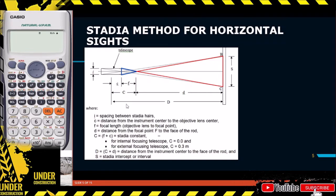So, capital D — which is the distance from the instrument center to the face of the rod — equals small d plus C. That is the total distance between the instrument and the rod placement. Then we have the Stadia intercept or Stadia interval S: if you take the rod reading from the upper Stadia and subtract the rod reading from the lower Stadia, you get the value of your Stadia interval S.